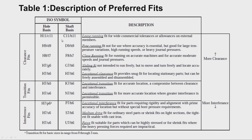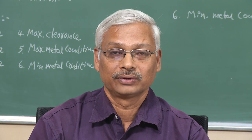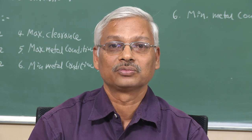In conclusion, in this lecture we studied various readymade tables and charts for finding tolerance values and the upper and lower limits of shafts and holes. We also studied different IT grades and the appropriate machining processes suitable for each grade. In the next lecture, we will continue with some numerical problems. Thank you.